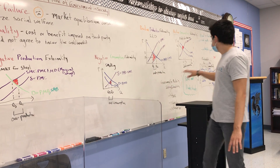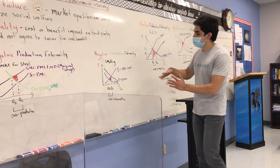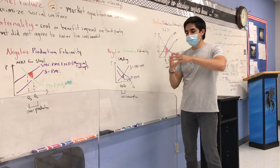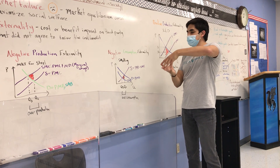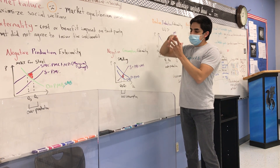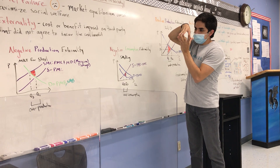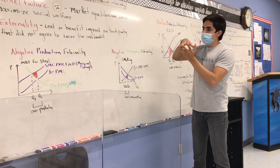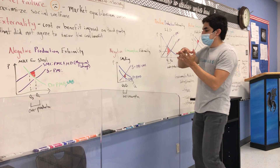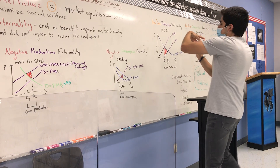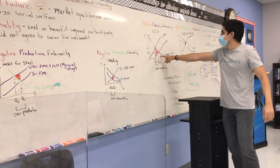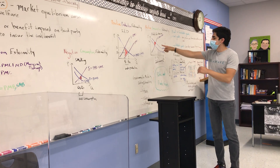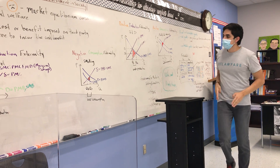I just want to talk about how to think about drawing deadweight loss. The deadweight loss triangle is always going to be pointed towards the socially desirable outcome to produce — that's an easy way to find the deadweight loss triangle. So the socially desirable outcome in this example of a positive production externality is here. In this example it's here, so the point is always pointed towards that.